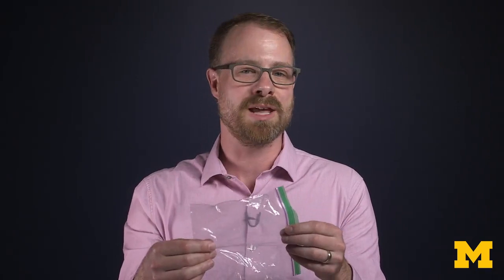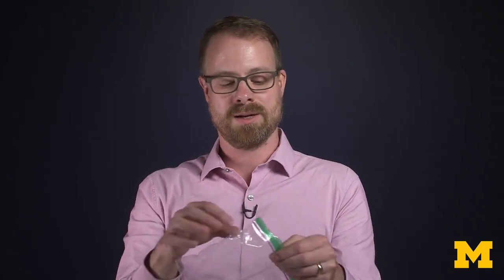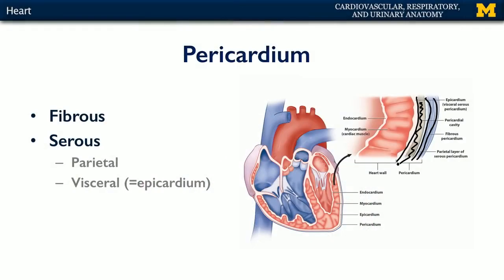When materials do enter that pericardial cavity — and sometimes these materials may be blood, lymph, or just exudate — that could put pressure on the heart such that the heart can't fully expand. That's a condition known as cardiac tamponade, which is basically a strangling of the heart.